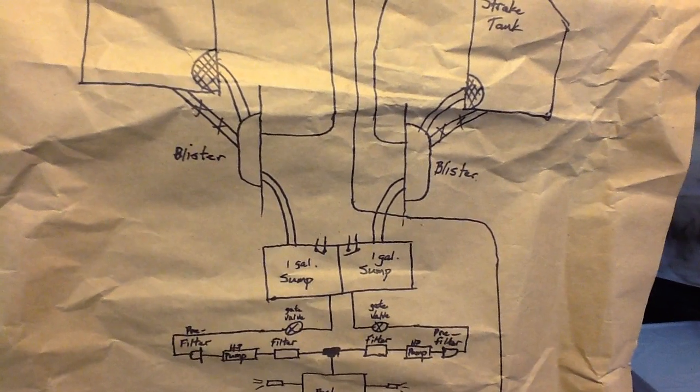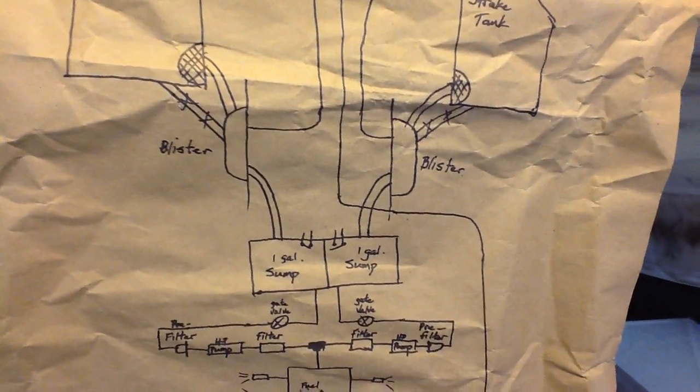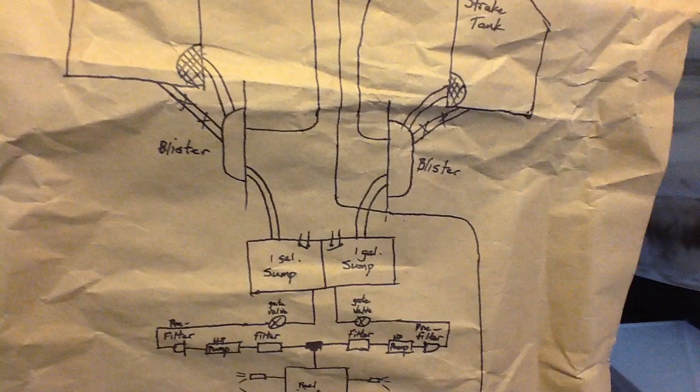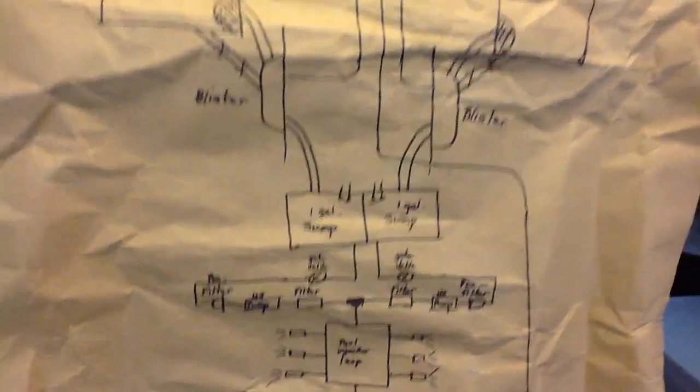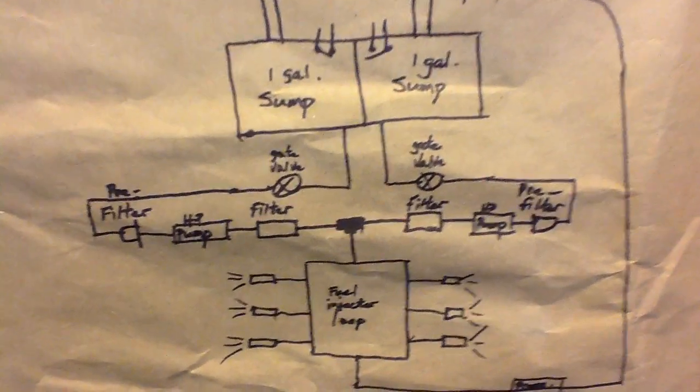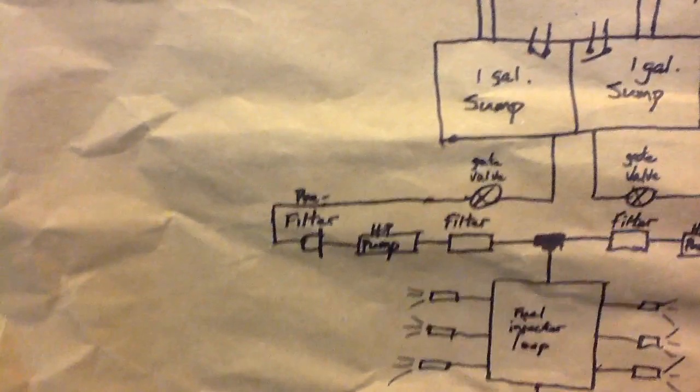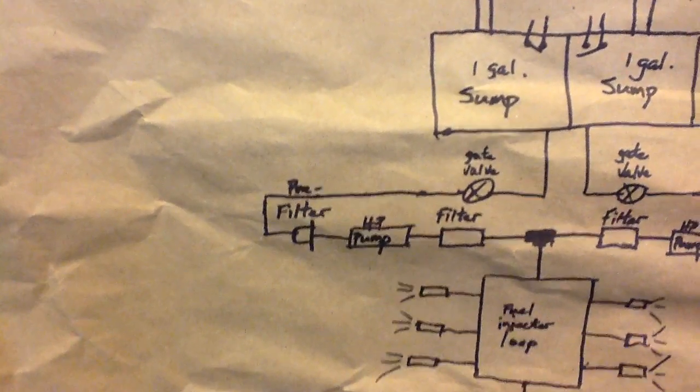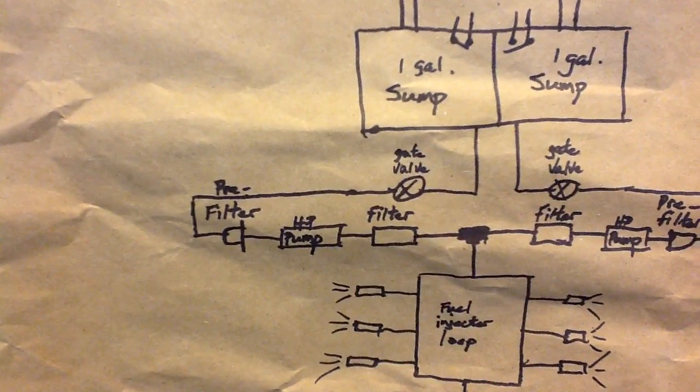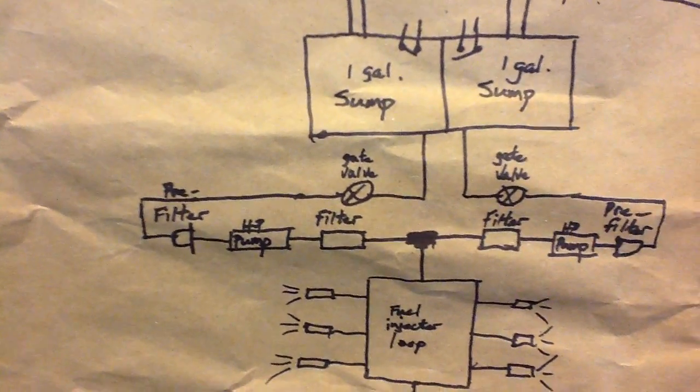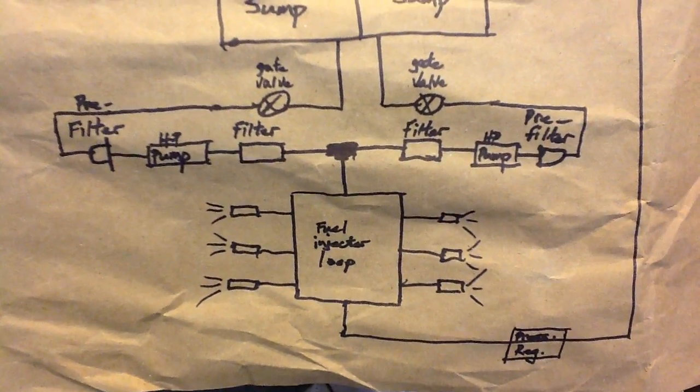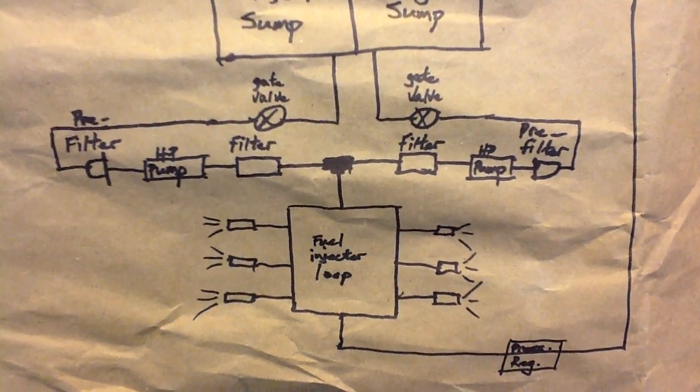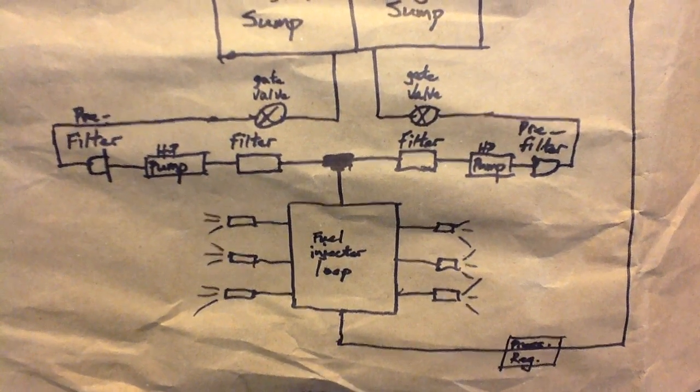The sump then goes through an emergency shutoff gate valve, then through a pre-filter which gets the crap out before the high-pressure pump. The output of the pump goes through a fine filter and down to the fuel injector loop, where it's injected under pressure into the cylinders, which is controlled by the computer.